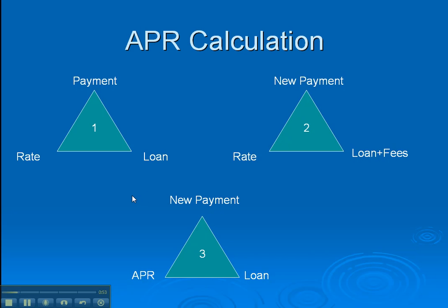The idea of APR — and it's mandatory that we disclose it — is that it can help a consumer shop. Instead of shopping rate and fees separately, they can shop one number called APR, compare APRs, and if it's the same loan, an apple-to-apple loan, the one with the lower APR is supposed to be the better loan.